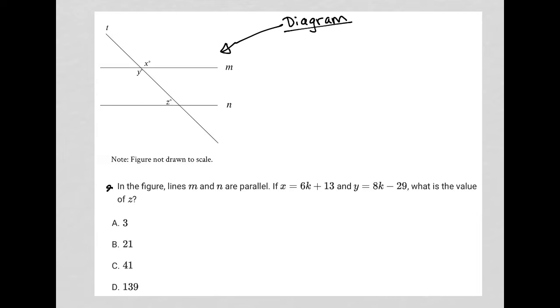The question says, in the figure, lines M and N are parallel. So I'm going to just put my parallel symbols here. If X equals 6K plus 13, and Y equals 8K minus 29, what is the value of Z?